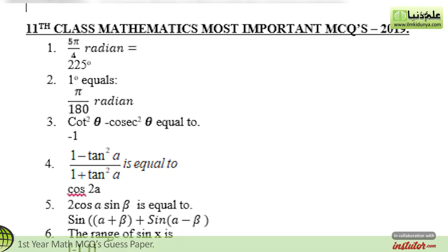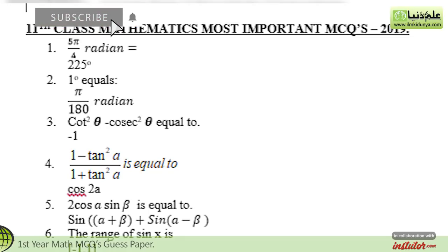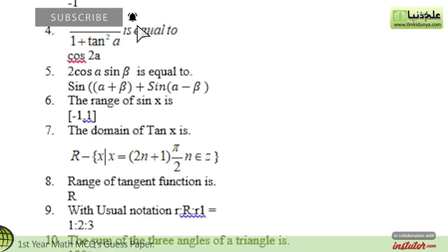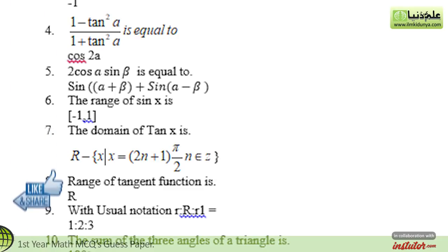The fourth statement is: (1 minus tan²α) divided by (1 plus tan²α) equals — the correct option is cos2α. The fifth statement is: 2cosα sinβ equals — the correct option is sin(α+β) plus sin(α−β). The sixth statement is: the range of sin x is — the correct option is [−1, 1].